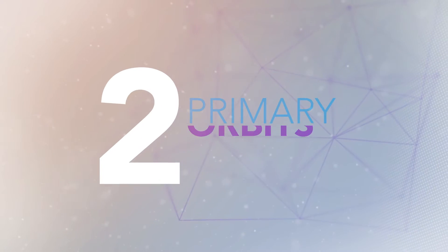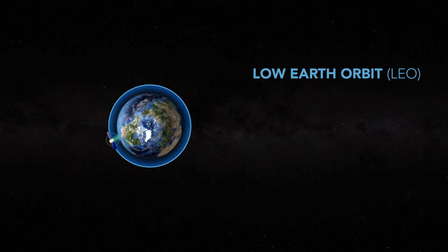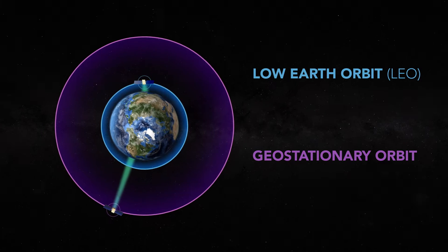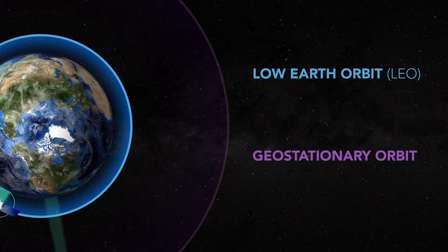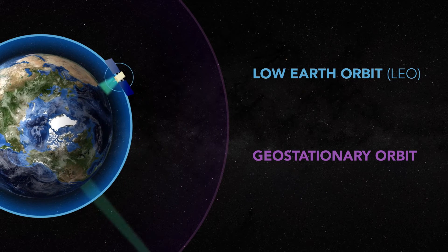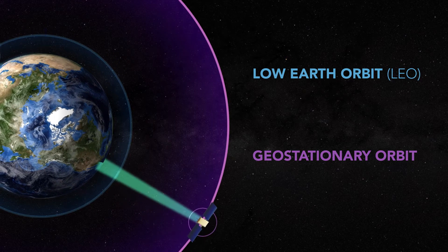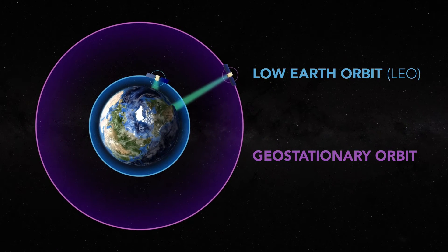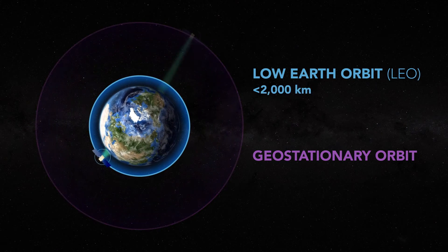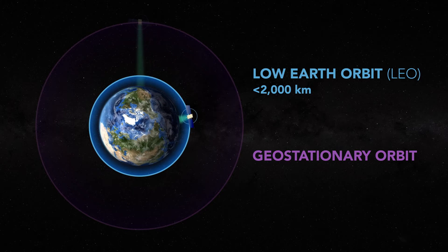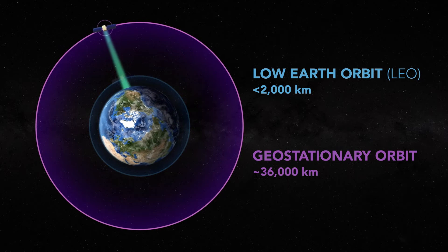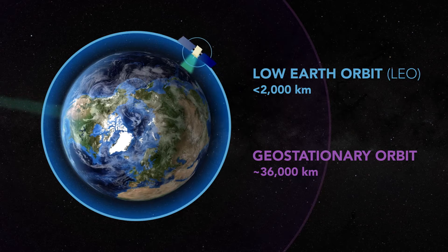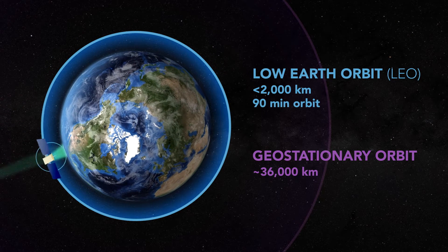There are two primary satellite orbits that we use: Low Earth Orbit, or LEO, and Geostationary Orbit. These orbits determine whether a satellite is scanning a piece of the Earth as it zooms around at high speed, such as an LEO, or if it's able to constantly measure the same area of the planet, as in a geostationary orbit. The main difference between the two orbits is altitude. LEO occurs below 2,000 kilometers in altitude, whereas geostationary orbit happens at approximately 36,000 kilometers.